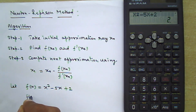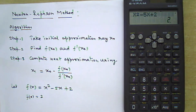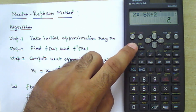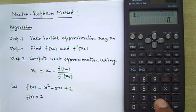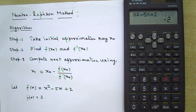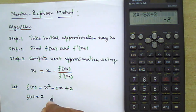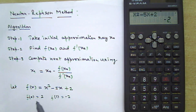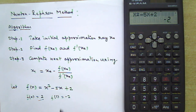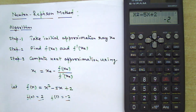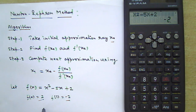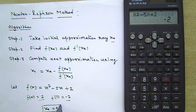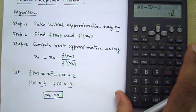The value of the function at x = 0 is 2, so f(0) = 2. Now press Calculation again, enter x = 1, and press equals. The value is -2, so f(1) = -2. The function has a positive value at x = 0 and a negative value at x = 1, meaning the root exists between 0 and 1. So our initial approximation x₀ = 0.